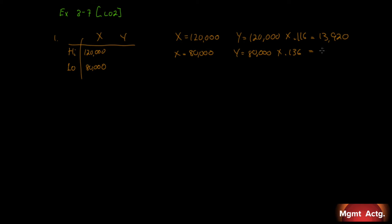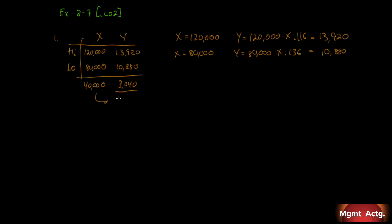Multiplying 80,000 by 13.6 cents gives us $10,880. So with X equal to 120,000, Y equals $13,920, and at X equal to 80,000, Y equals $10,880. Subtracting the X values gives us 40,000, and subtracting the Y values gives us $3,040.